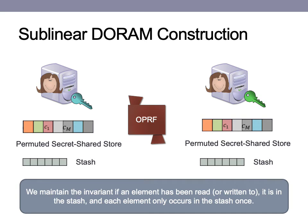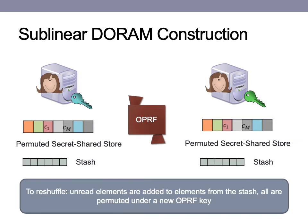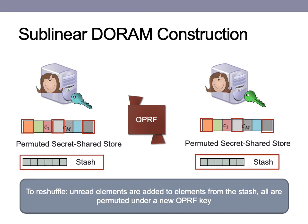If an element has been read or written to, it is in the stash, and each element only occurs in the stash once. This eliminates the issue present in the initial square root ORAM construction where oblivious sort was used to remove duplicates, making it not constant rounds. We also rely on the observation that each server knows, without loss of privacy, the set of elements that have not been read in the store during the current epoch. Reshuffling is a simple process that takes the elements in the stash and the unread elements in the store, and simply privately re-permutes them under a new OPRF key. The stash is then filled with new dummy blocks to be overwritten during the new epoch. Because the permutations between the two epochs cannot be linked, obliviousness is preserved, and the permutation process can be done in constant rounds, though in linear time.